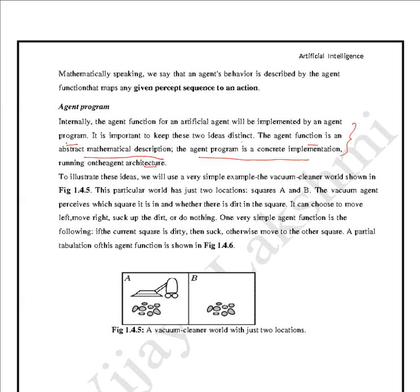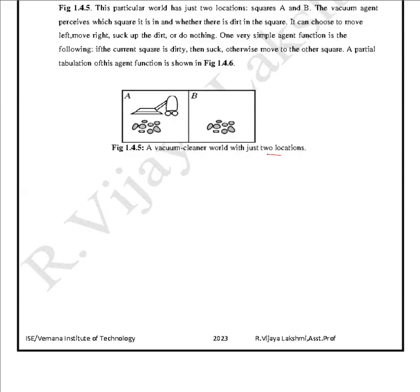Let's understand agent function and agent program with an example: the vacuum cleaner world with just two locations, A and B. The vacuum cleaner agent is in square A or B, and there may be dirt present. The environment has two squares. The agent must learn: if it finds dirt, it picks it up; if the square is clean, it moves to the next location.